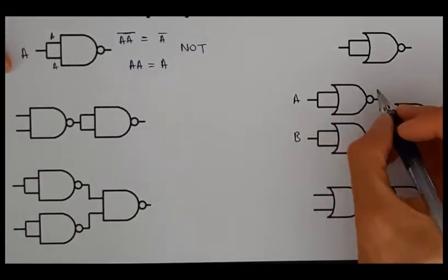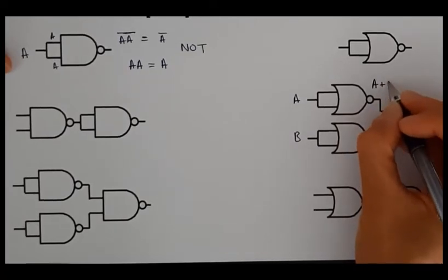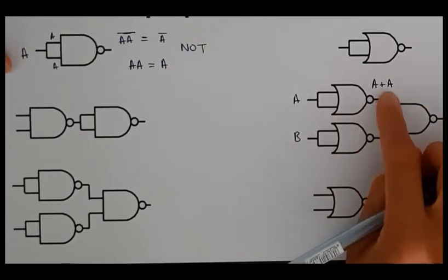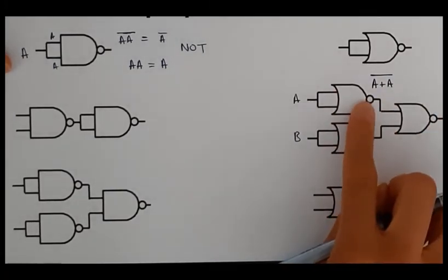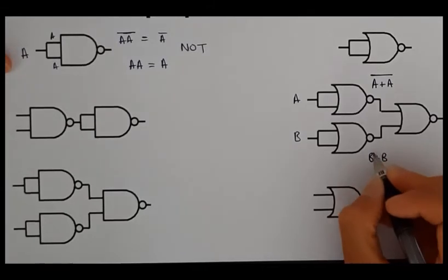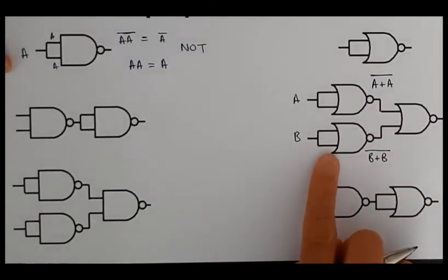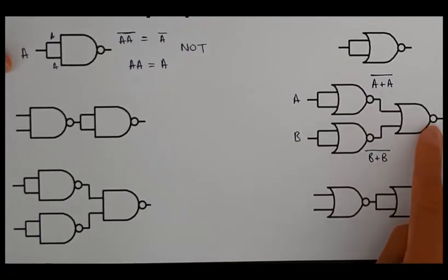It's the same input on both and it's an OR gate. So it's A OR A and then the whole thing is NOTted because it's a NOR gate. So then of course this one is going to look the same apart from B as the input. And then these two things are going into another NOR gate.